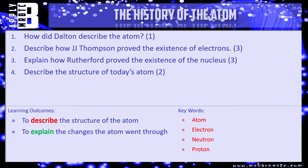Now let's see how much you've picked up - I've got four questions. Number one: how did Dalton describe the atom? Worth one mark. Number two: how did JJ Thompson prove the existence of electrons - what did he measure, where were they fired out of, and what did that prove? Number three: explain how Rutherford proved the existence of the nucleus - what did he fire into the gold foil, how many went through, and how did that prove the existence of the nucleus? And finally, describe the structure of today's atom - what are the three subatomic particles called and where are they found? Pause the video, have a go, and we'll see how you've done.